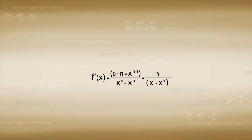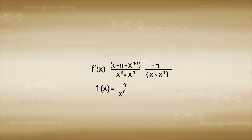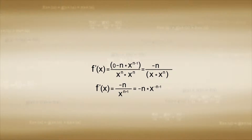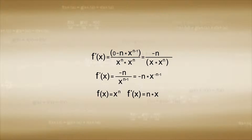This simplifies further to the derivative of f of x being equal to negative n over x raised to n plus 1, which is equal to negative n times x raised to negative n minus 1. This leads us to conclude that what was true for positive integers is also true for negative integers. If n is an integer, then for functions where f of x equals x raised to the power of n, the derivative is equal to n times x raised to the power of n minus 1.